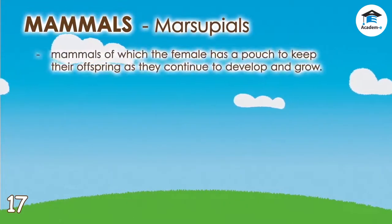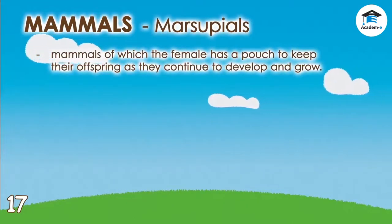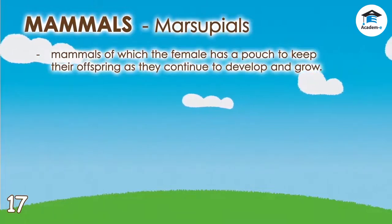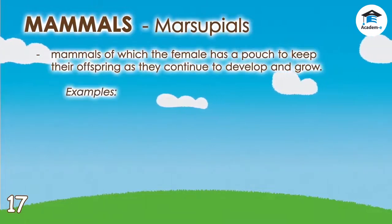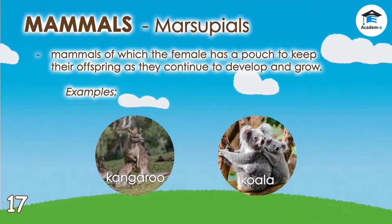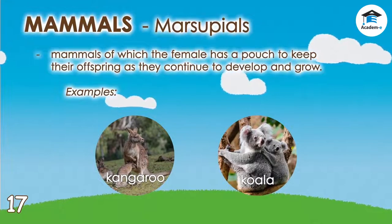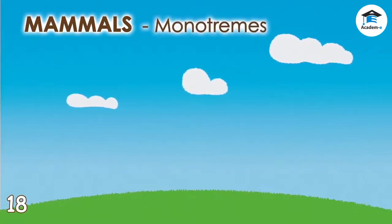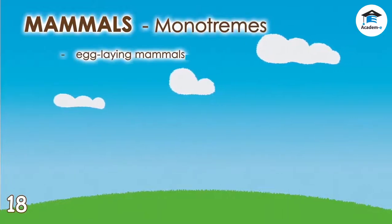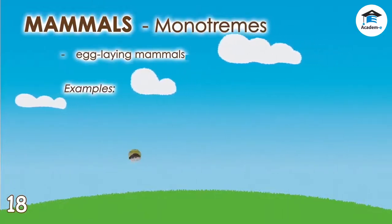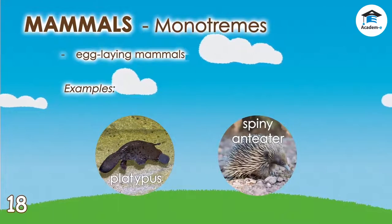Marsupials are mammals of which the female has a pouch to keep their offspring as they continue to develop and grow. Marsupials include kangaroos and koalas. Monotremes are egg-laying mammals and include the platypus and the short and long-beaked echidnas, or spiny anteaters.